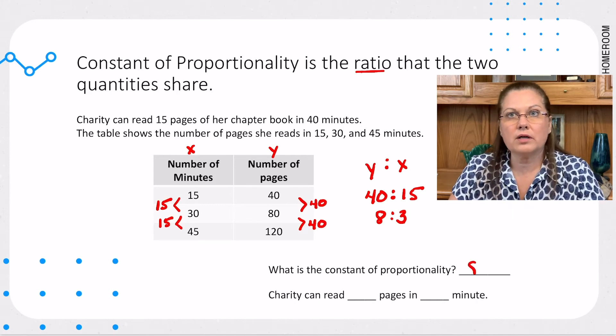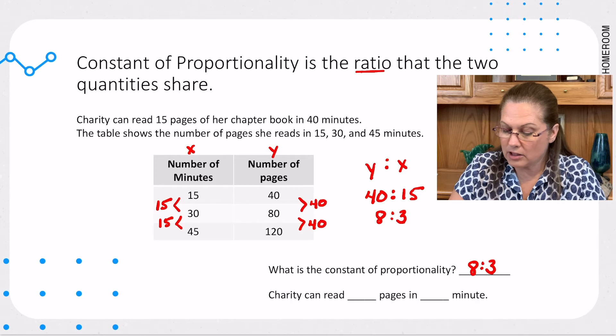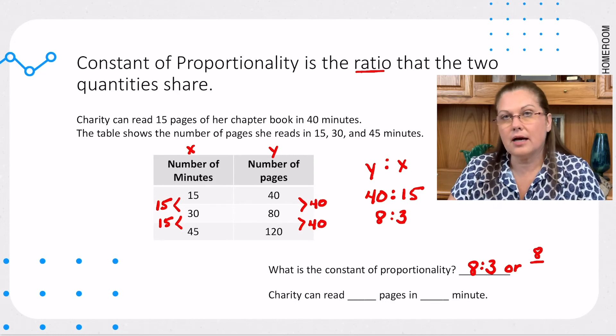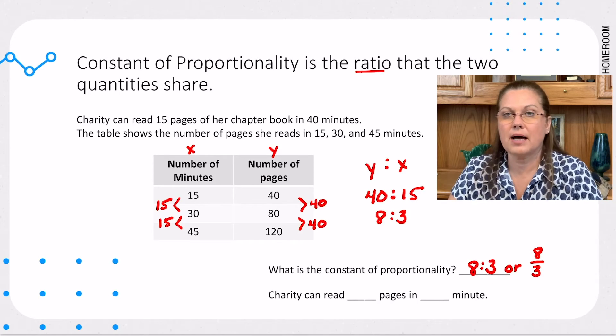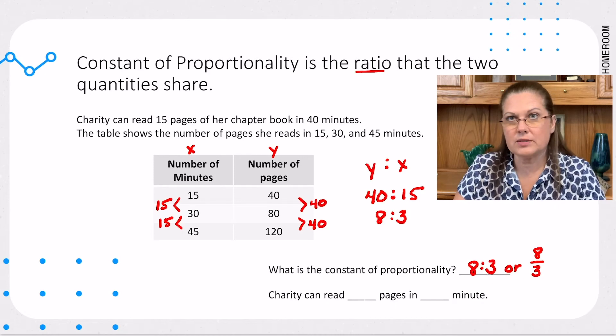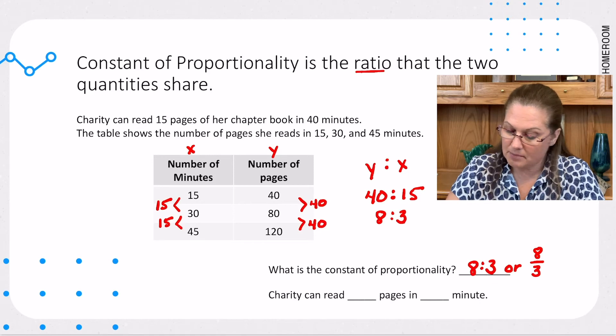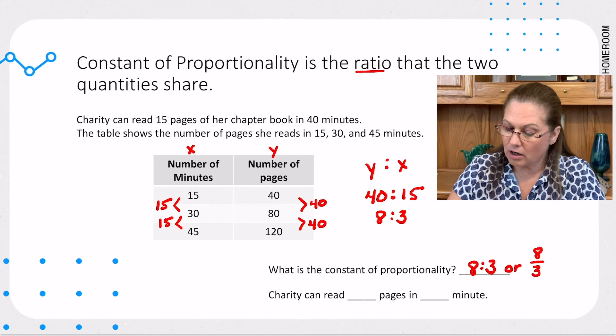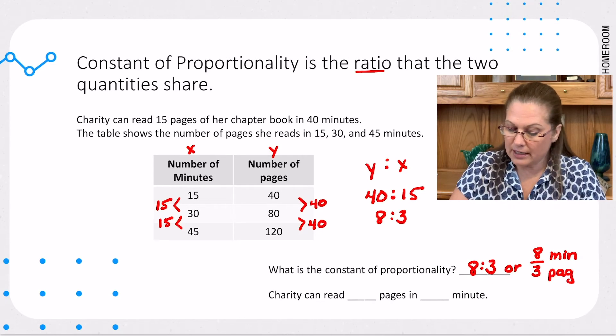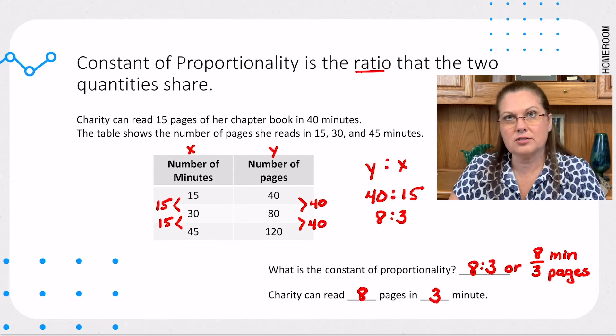We also might want to write it as a fraction. And when we do write that as a fraction, we're going to put our y value on top as our numerator and our x value down below as our denominator. These particular positions actually tell us something about our situation. Remember, our x value is the number of minutes and our y value is the number of pages. So, we can actually start putting labels on these. I can say 8 pages and our 3 is going to be minutes. So, I can actually say Charity can read 8 pages in 3 minutes. So, our constant of proportionality is 8 thirds or 8 to 3.